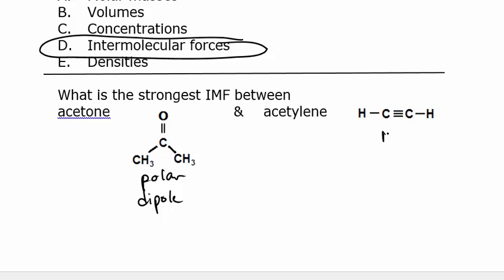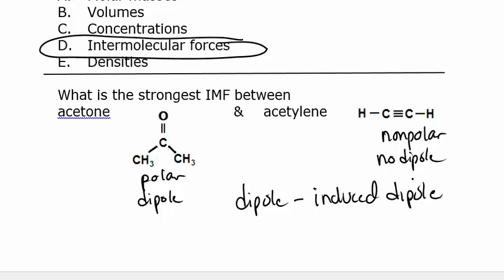If something's polar, it has a dipole. If you look at acetylene, you should be able to tell that it's nonpolar, and therefore it has no dipole. But it can be induced to have a dipole. So if something with a dipole, something with no dipole, you would call that dipole induced dipole forces between them. The acetone has a dipole, the acetylene gets an induced dipole.